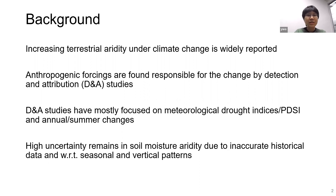However, those past detection and attribution studies mostly focused on meteorological drought index or the Palmer drought severity index, and they also mostly focused on annual average or summer average changes. As a result, there is still very high uncertainty in how anthropogenic forces affect soil moisture based aridity, which is affected by additional factors such as vegetation and soil texture much more severely than meteorological drought indices. There is also high uncertainty regarding seasonal and vertical variability in those anthropogenic impacts.